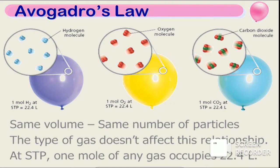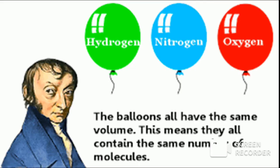One mole of hydrogen occupies 22.4 liters of volume at STP. Similarly, one mole of oxygen at STP occupies 22.4 liters. One mole of carbon dioxide at STP is equal to 22.4 liters.